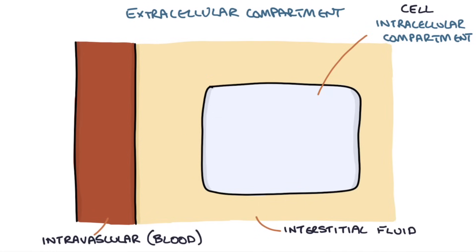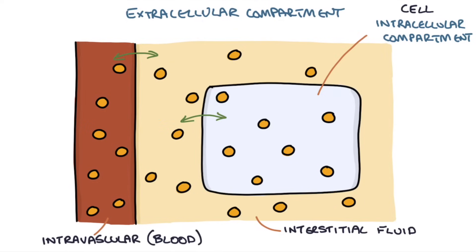For example, if there's more sodium in the blood, water will move out of the cells and the interstitial fluid and flow into the blood. And if there's a lot of sodium in the cell, the water will flow out of the blood and the interstitial fluid and into the cells. This way, the water movement balances out the osmolarity across the different spaces.